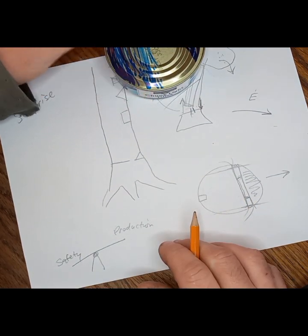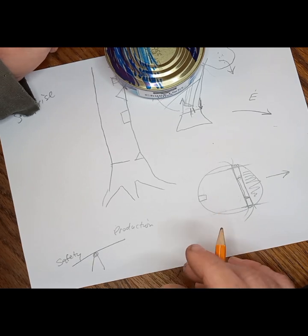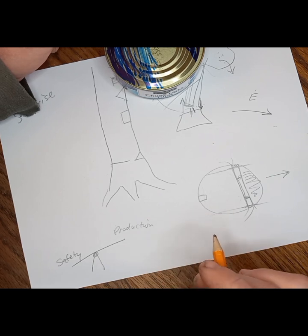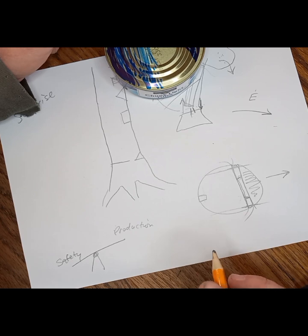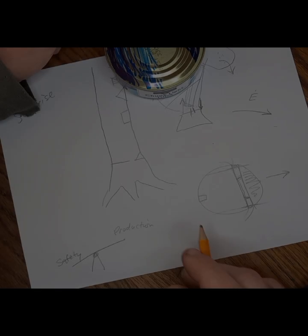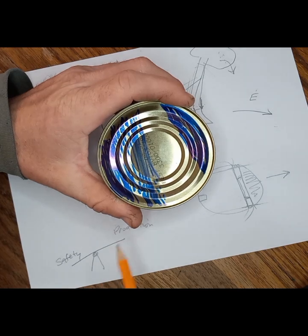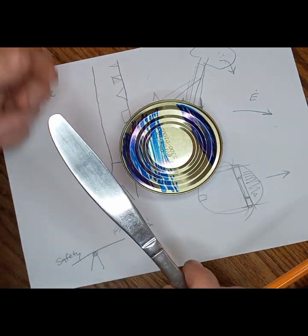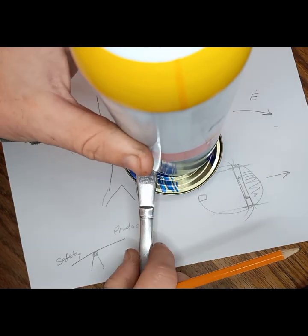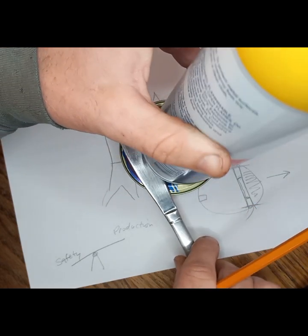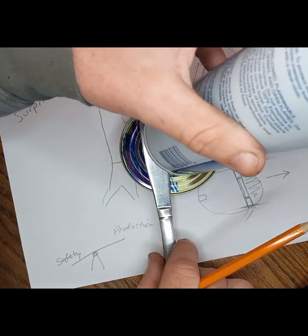The logger's life is his and his alone to protect, and how he can protect his life is by having situational awareness and always avoiding surprises. It matters less which way the tree goes than it matters that the logger knew it was going there. The trade-off with this live steering method—when I say live steering, I mean that we can alter the angle and cause the tree to go as we steer.